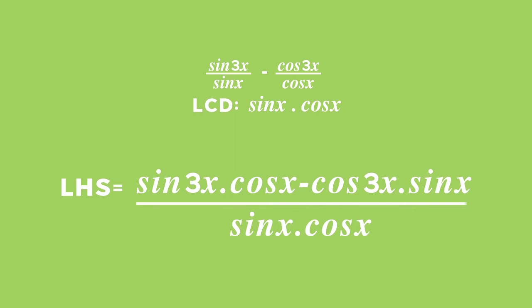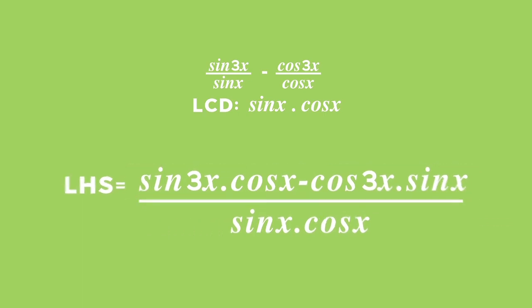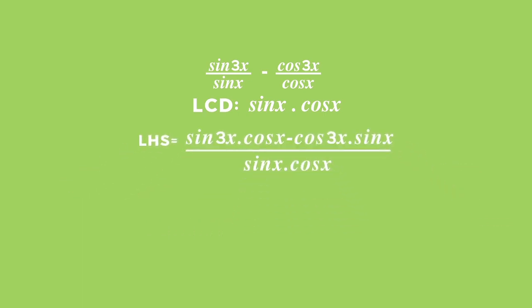In the numerator of the fraction, you have the form sin cos minus cos sin of the same angles. This is a clue that you will need to use compound angles to reduce the numerator further. So, in the numerator, we recognize the sin compound angle expansion, and we can rewrite the numerator as sin of 3x minus x in brackets, and leave the denominator unchanged as sin x times cos x.